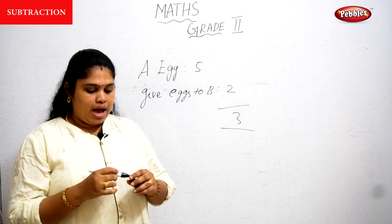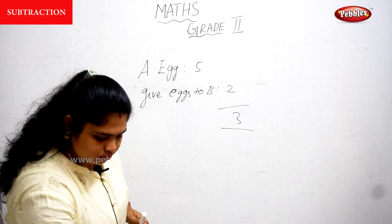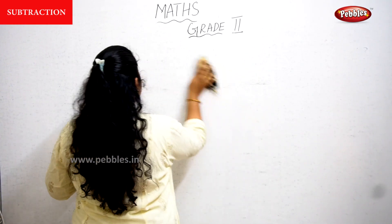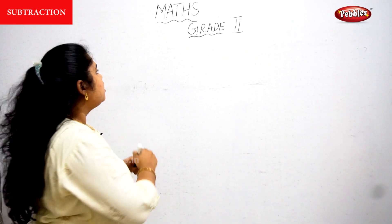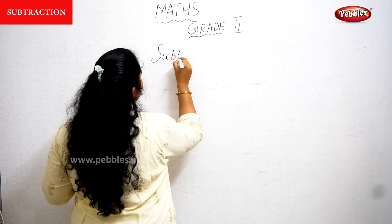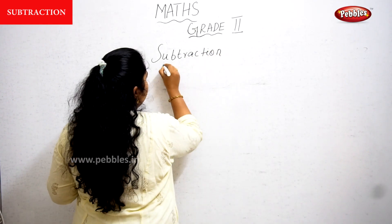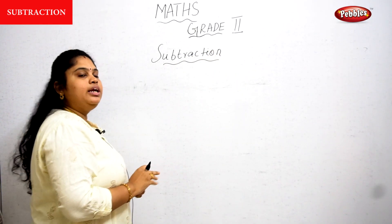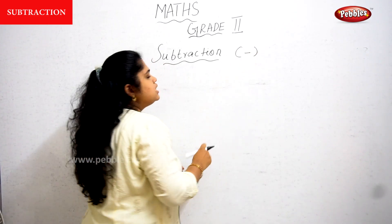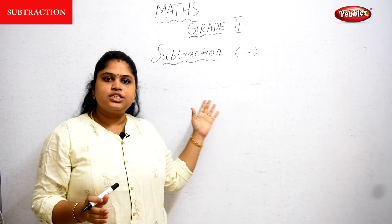How will you calculate the subtraction? Using backward counting. Addition means forward counting; subtraction means backward counting. What is the symbol for subtraction? For addition we use a plus mark; for subtraction we use a minus symbol.